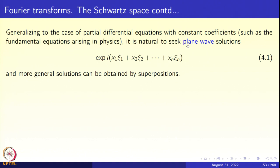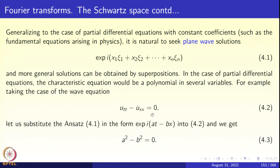Equation 4.1 gives exp(i(x₁χ₁ + x₂χ₂ + … + xₙχₙ)), which is an example of a plane wave with frequency vector (χ₁, χ₂, …, χₙ). More general solutions can be obtained by taking linear combinations, or superpositions as you would see it in physics. In the case of the wave equation, for example, u_tt − u_xx = 0.